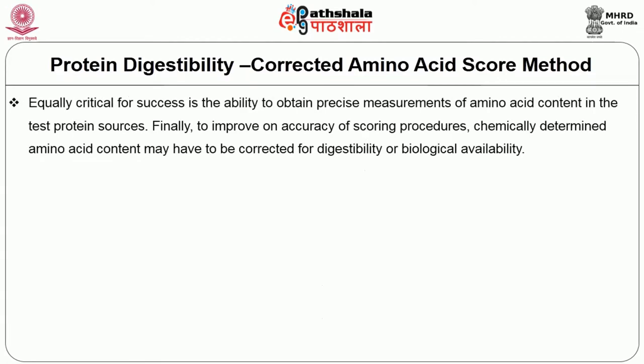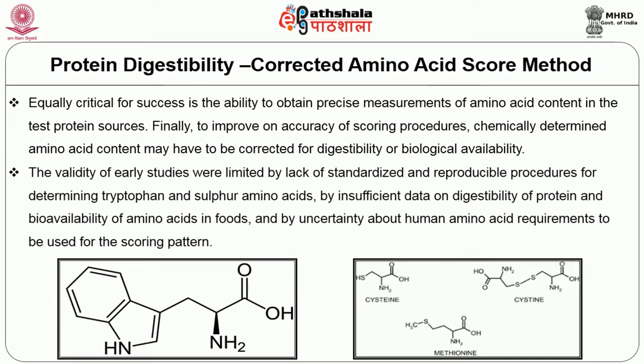Shortcomings have been recognized and progress has been made in accurately evaluating human amino acid requirements. Critical for success is the ability to obtain precise measurements of amino acid content in test protein sources. To improve accuracy of scoring procedures, chemically determined amino acid content may need to be corrected for digestibility or biological availability. Early studies were limited by lack of standardized procedures for determining tryptophan and sulfur amino acids, insufficient data on digestibility and bioavailability of amino acids, and uncertainty about human amino acid requirements for the scoring pattern.